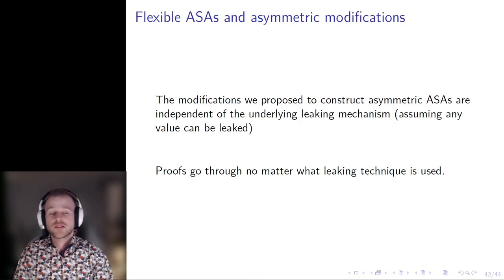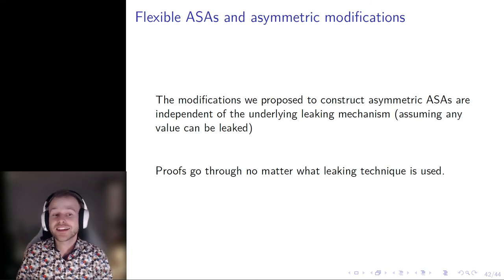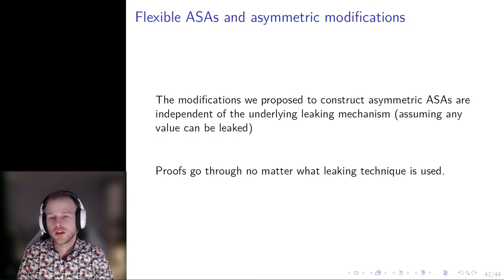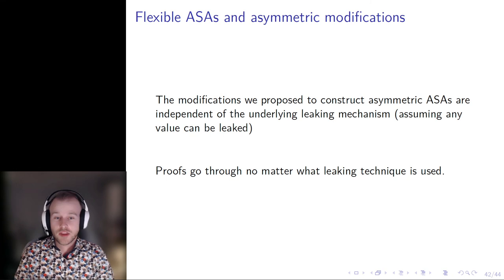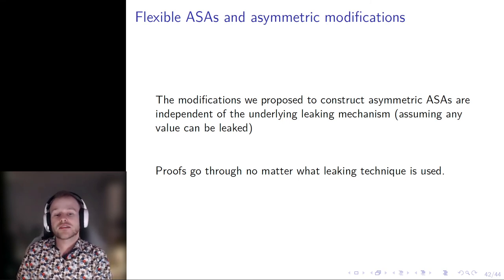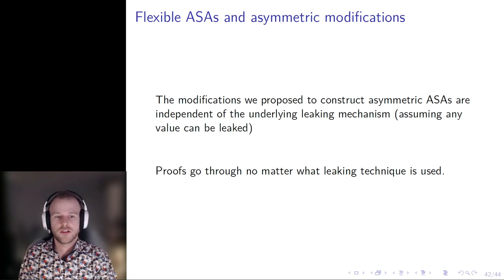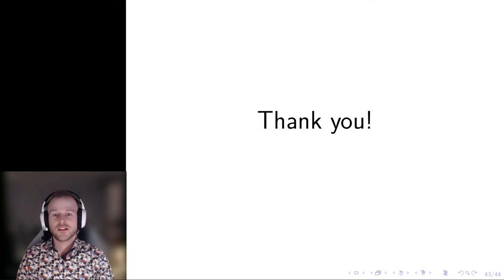In the final section, we consider generic modifications to symmetric ASAs to make them asymmetric. The modifications shown are independent of the leaking mechanism used, so long as that mechanism can leak an arbitrary value — we call this property of ASAs flexible. We can apply these modifications to any flexible symmetric ASA to obtain a flexible asymmetric ASA. Some of the ASAs discussed today, including BPR's and BJK's, are considered flexible, and others are not. Thank you very much for watching.